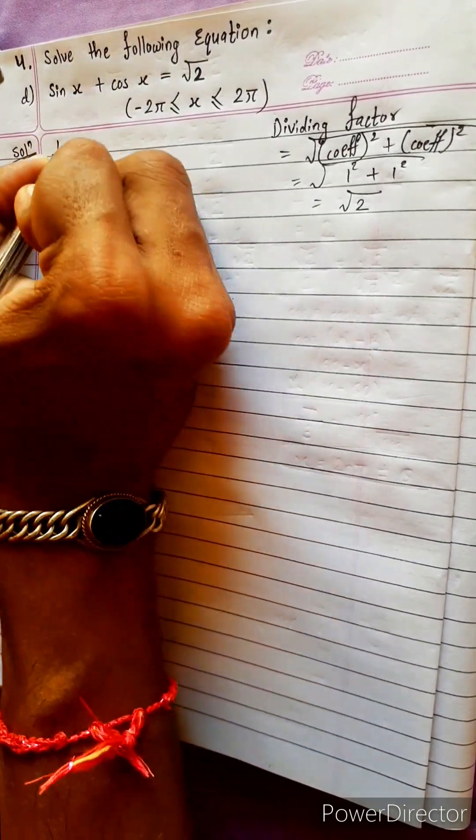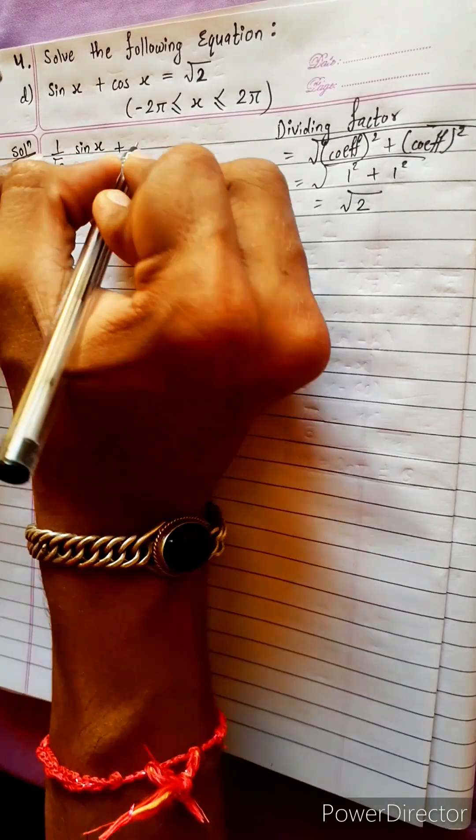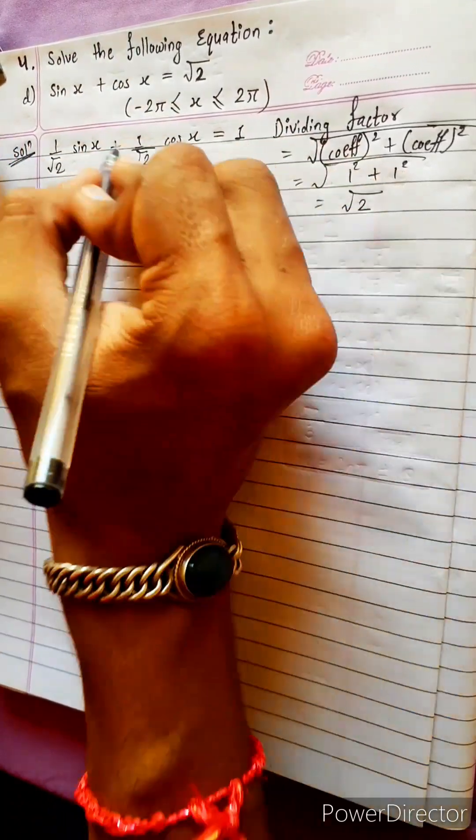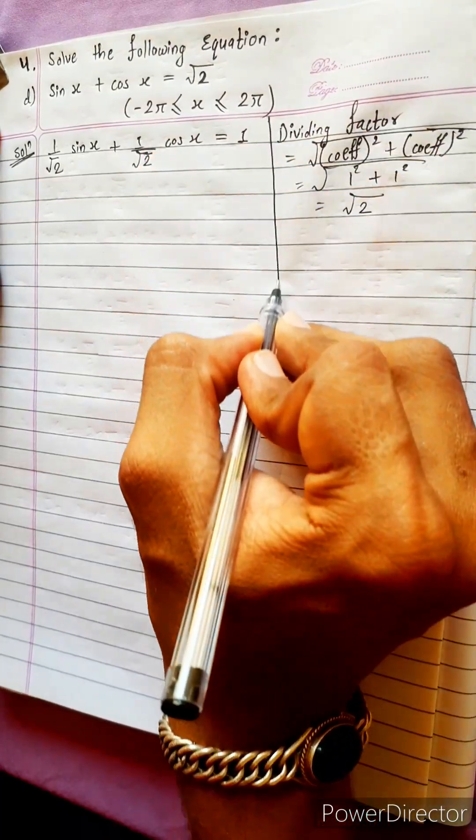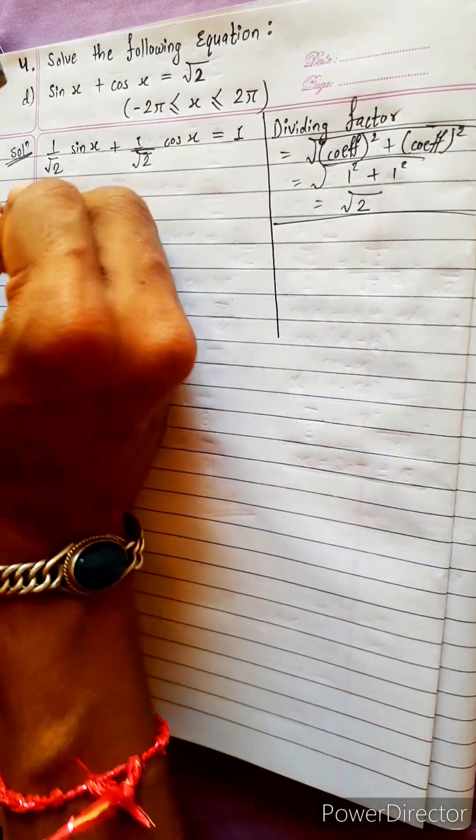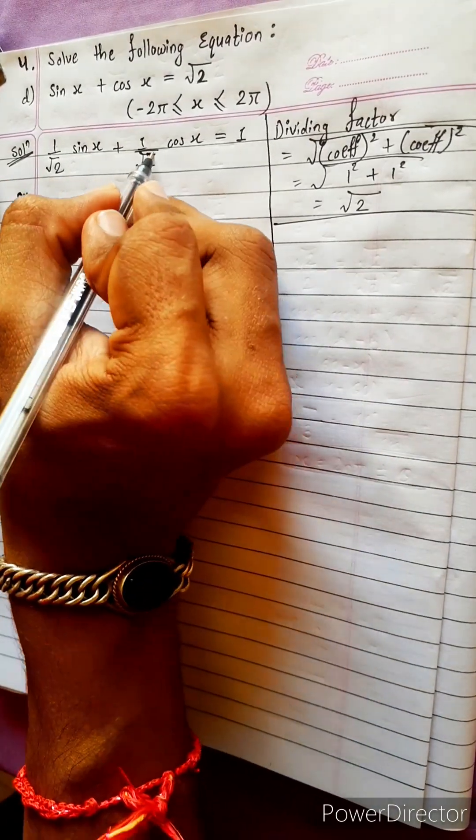1 by root 2, 2 sin x plus 1 by root 2 cos x equals to 1. By any method you do, either you do by dividing factor or you directly bring this to left side, same result you will get. If not, then subscribe my channel.